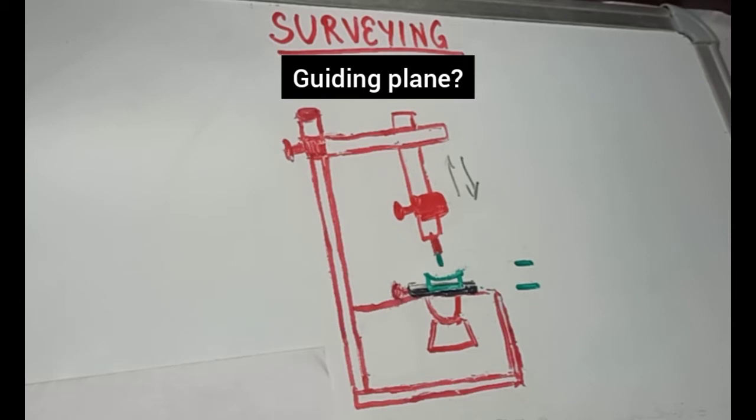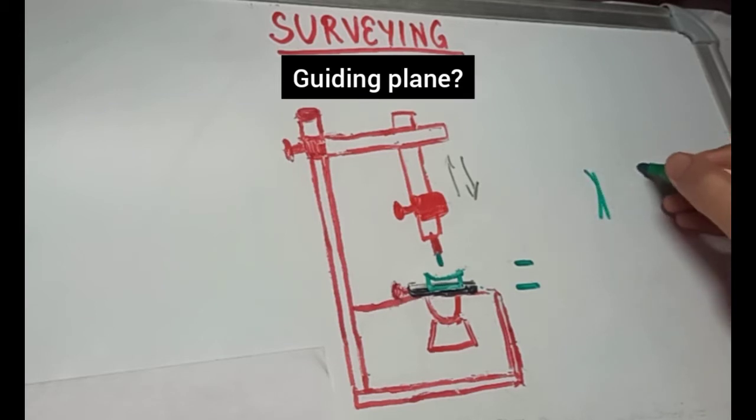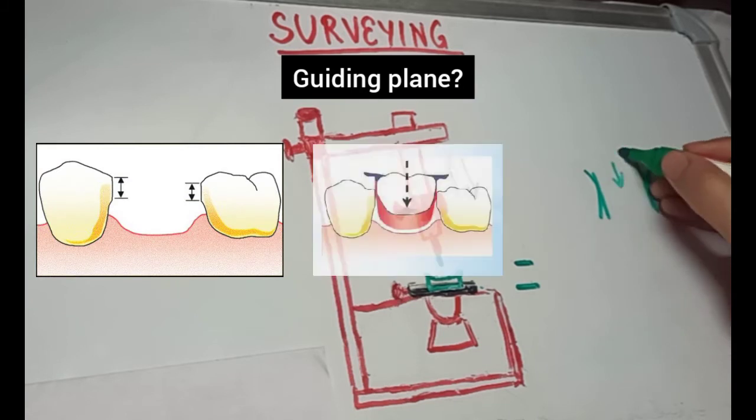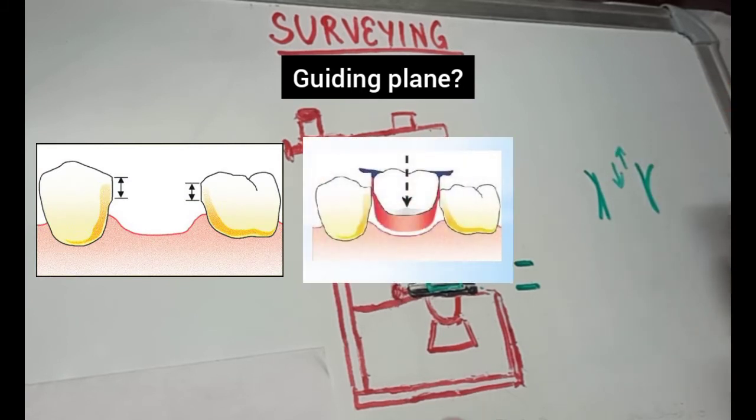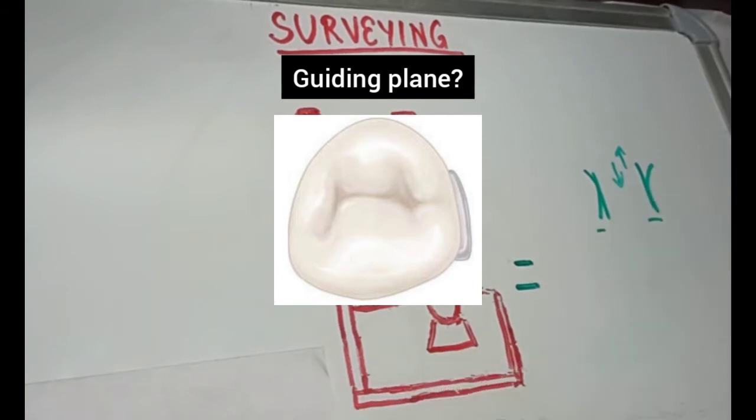We know that we have to create parallelism so that our RPD can easily glide as it is inserted and removed from the mouth. To create this parallelism, the axial surfaces of the abutment teeth are prepared such that they are parallel to each other and provide an easy path of insertion and removal. They are parallel to each other and also to the path of insertion. And they should also curve buccolingually to form the normal contour of the tooth. So, these guiding planes are prepared on the axial surfaces of the abutment teeth.